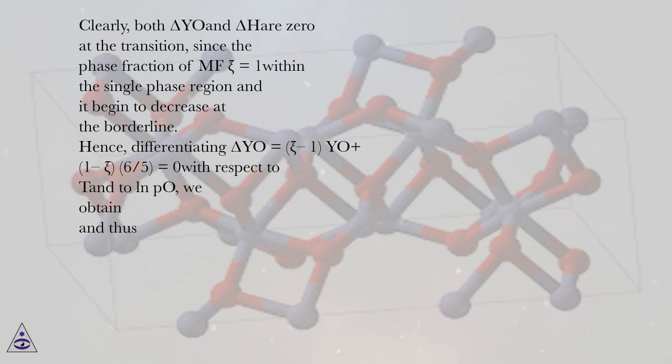Clearly, both ΔYₒ and Δh are zero at the transition, since the phase fraction of MF ψ = 1 within the single-phase region and it begins to decrease at the borderline. Hence, differentiating ΔYₒ = ψ(1)Yₒ + (1-ψ)(6/5) = 0 with respect to T and ln PO₂, we obtain...